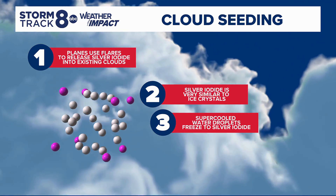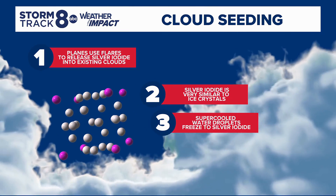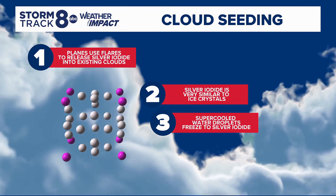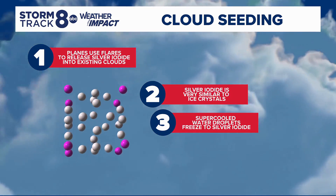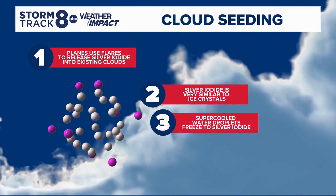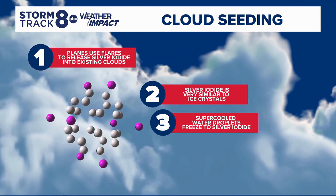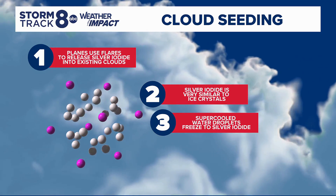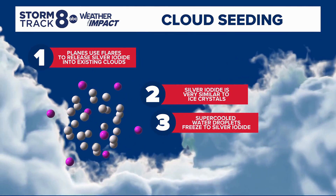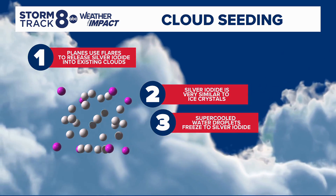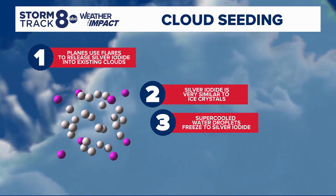Planes fly into those clouds and fire little rockets containing what we call silver iodide. Silver iodide is a compound that is very, very similar to an ice crystal or a droplet of water — nearly the same composition. Those are the crystals you need to grow the cloud, to promote more raindrop and snowflake development. It essentially allows the cloud to maximize its potential in terms of expansiveness and growth.